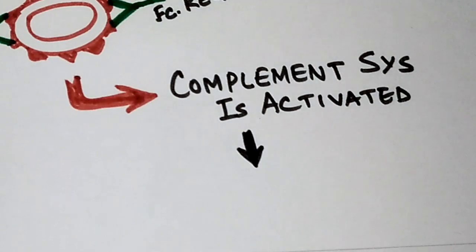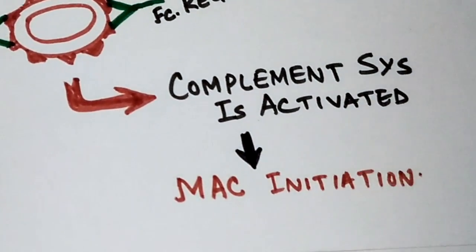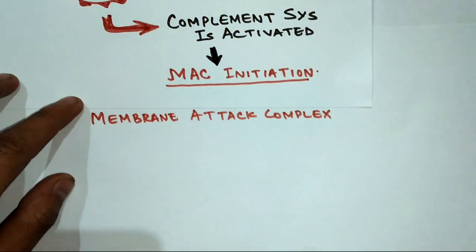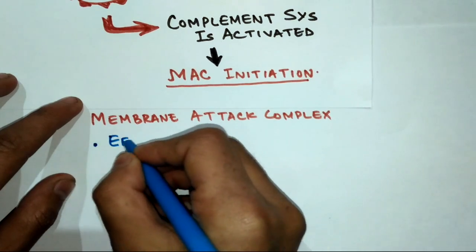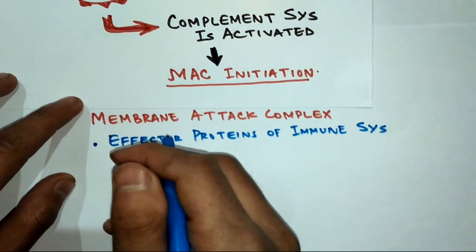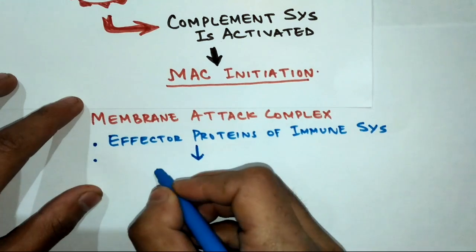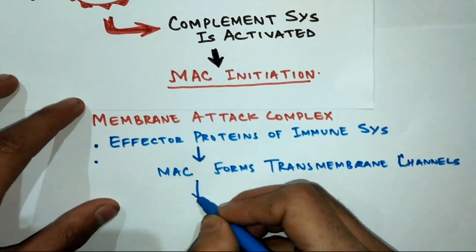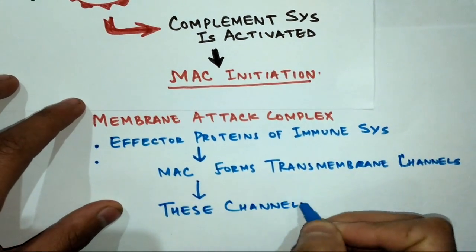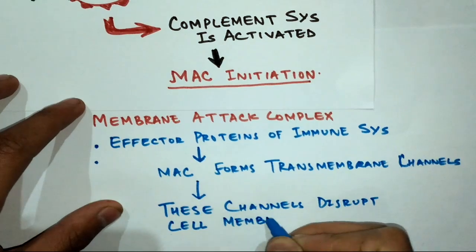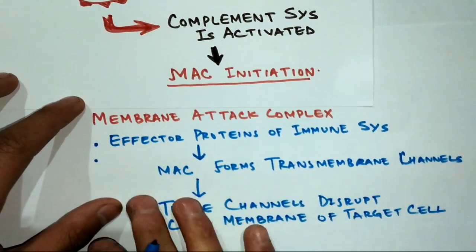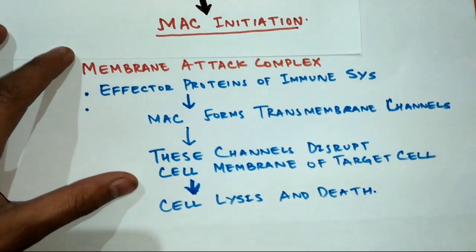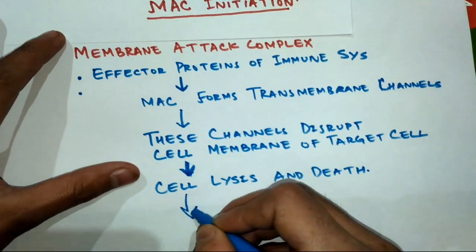After the complement system is activated, we have MAC initiation. The membrane attack complex consists of effector proteins of our immune system that form transmembrane channels. These channels disrupt the cell membrane of the target cell — in this case, the red blood cell. The membrane attack complex targets the plasma membrane of the RBC, resulting in cell lysis and death, followed by phagocytosis.